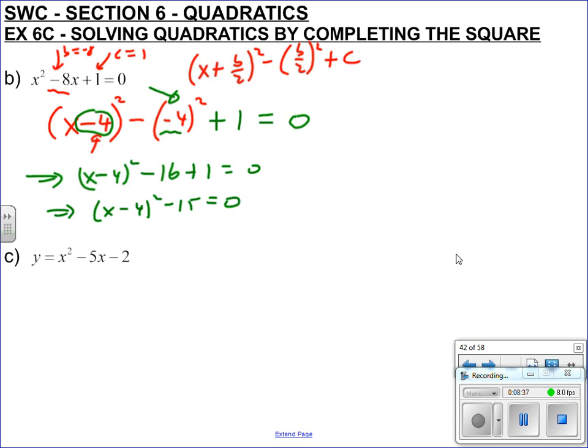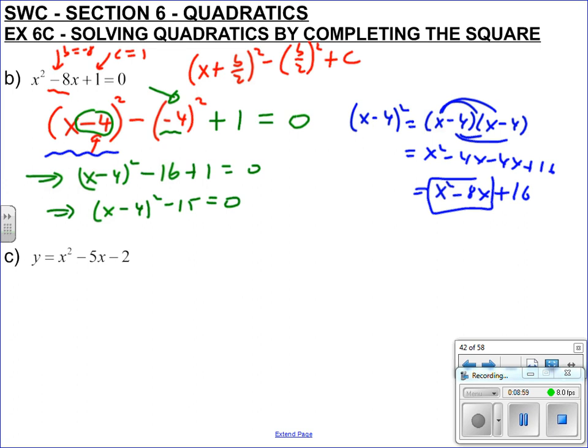And just to reiterate again why we're doing this, why are we doing that? Because remember, x take 4 squared is the same as x take 4 times x take 4. When you multiply it out you get x squared, you get minus 4x, you get minus 4x, minus 4 times minus 4 is plus 16. So you get x squared minus 8x plus 16, so you get those first two terms, you see? And then if you take the 16 away you no longer have this plus 16 anymore, so you're just left with those first two terms in the question. And then you just add the 1 to correct it.